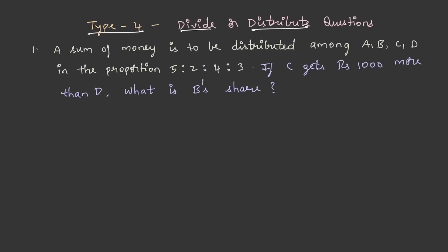Type 4. Divide or distribute questions. A sum of money is to be distributed among A, B, C, D in the proportion 5 is to 2 is to 4 is to 3. If C gets rupees thousand more than D, what is B's share? Let us solve this. Let us assume the share of A as 5x and that of B as 2x and C as 4x and for D it is 3x.